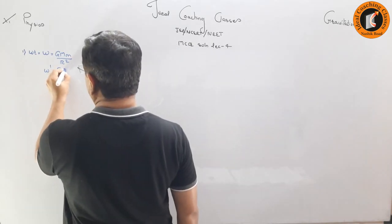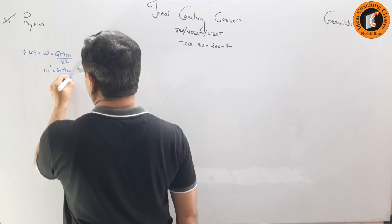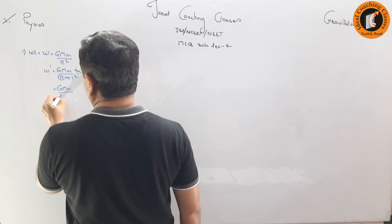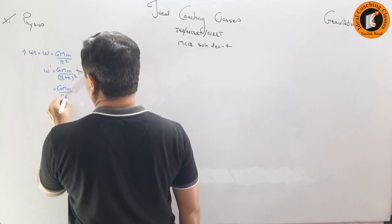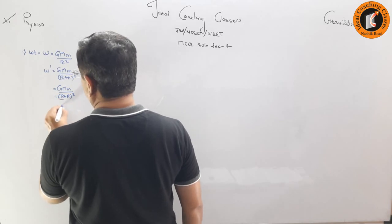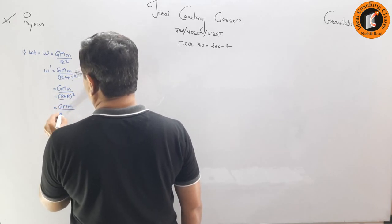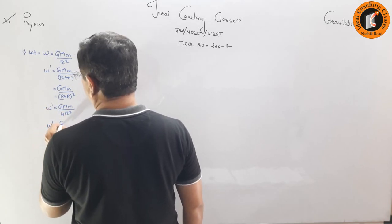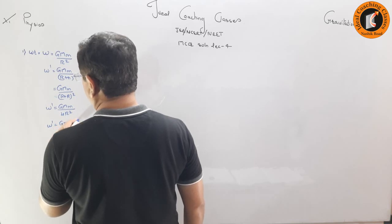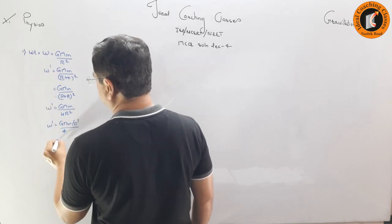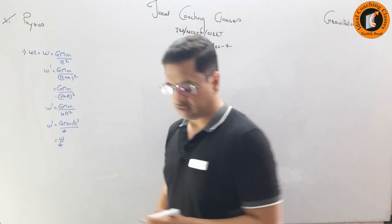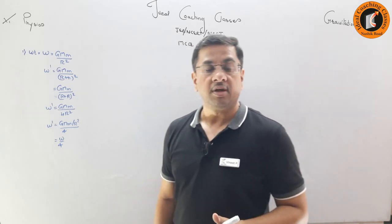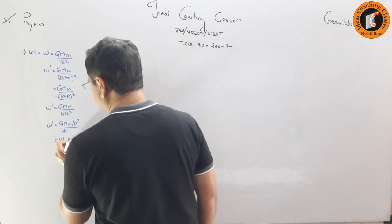W dash = GMm / (R + h)² = GMm / (R + R)² = GMm / (2R)² = W/4, since h = R. The answer is W/4. The correct option is C, the third option.